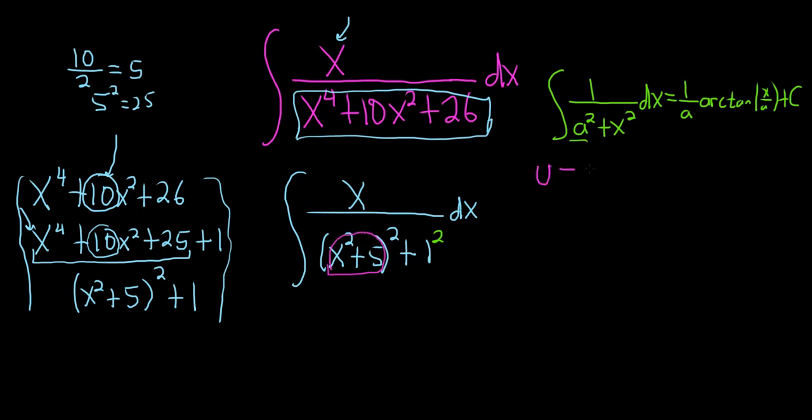So we'll let u be equal to x squared plus 5. And then that means that du, well, the derivative of x squared plus 5 is just 2x. Because the derivative of 5 is 0 dx.